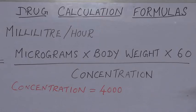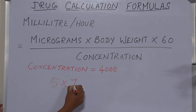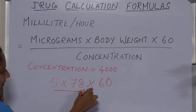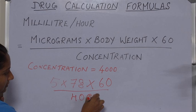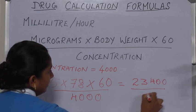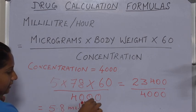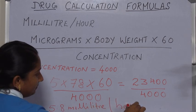Next, we use this concentration to determine the flow rate. We already have calculated the concentration to be 4000. The doctor's order was to give 5 micrograms. So, the flow rate can be calculated as 5 times 78, which is the patient's body weight in kilograms, times 60, divided by the concentration, which is 4000. This is 23,400 divided by 4000. This equals 5.8 ml per hour. This is the flow rate that needs to be entered into the syringe pump.